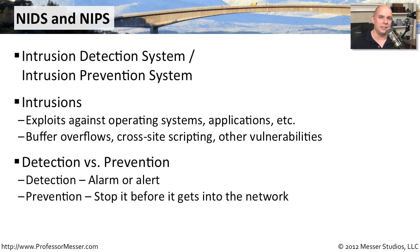Intrusion prevention systems can not only identify when somebody is trying to take advantage of vulnerabilities, but they can stop the traffic as it flows through the network. The traffic passes through the IPS, the IPS identifies that someone is trying to use an exploit against one of your servers, and it simply drops the traffic. It does not allow that traffic to ever reach the server — even if the server was unpatched and susceptible, the IPS would have stopped those packets before they got there.